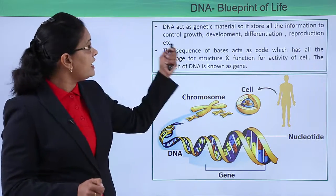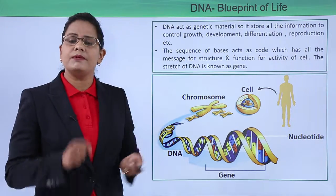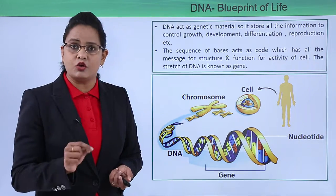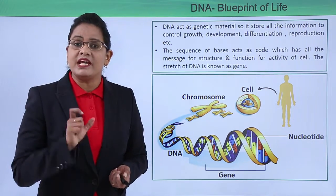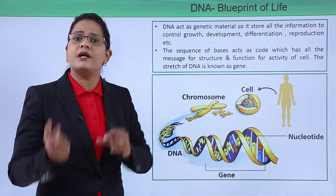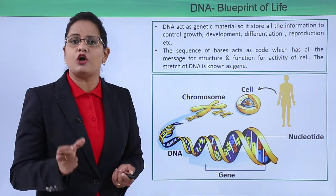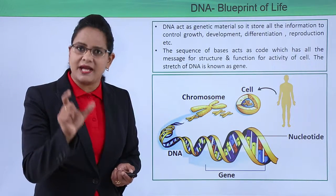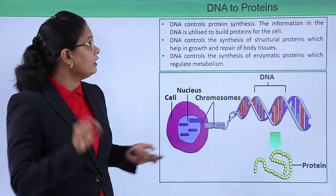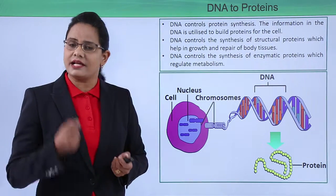We can say that DNA is like a secret agent which has all the information about our body inside it. Therefore DNA acts as a genetic material because it stores all the information regarding growth, development, differentiation, and reproduction, and it is present inside the cell within the chromosome. The term 'gene' refers to a stretch of DNA — for example, a stretch of DNA that codes for a particular type of functional protein. Three bases together form a code that codes for an amino acid.